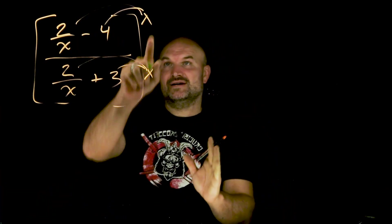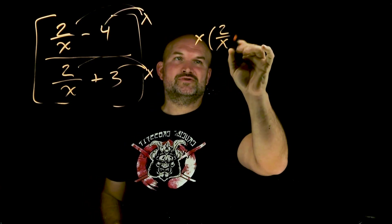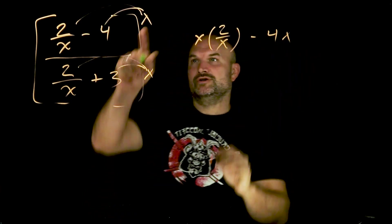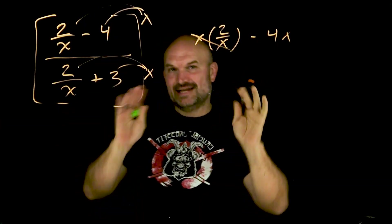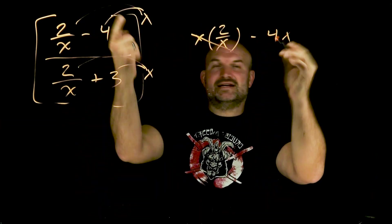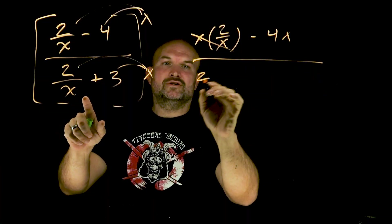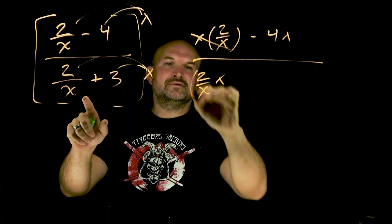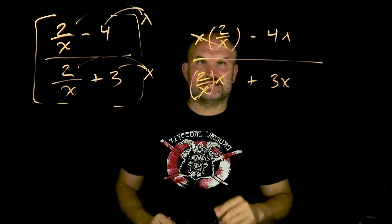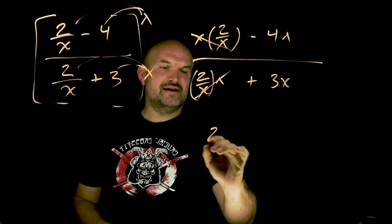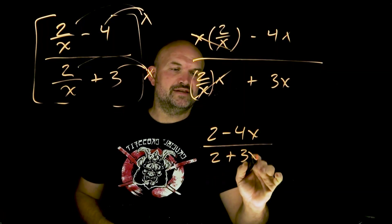Because what happens there when I multiply x times 2 over x — I just want you to see — when you multiply x times 2 over x, the x divides into itself. So we could say it divides out. And then obviously I have x times 4 is 4x. And then over here, you're going to have 2 over x times x — x's are going to divide out — plus a 3x. Now let's go and rewrite our simplified term: I have 2 minus 4x divided by 2 plus 3x.